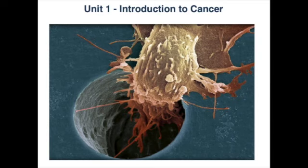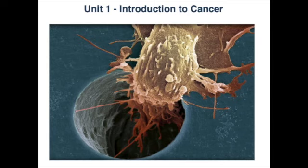Cancer can be defined as a disease in which a group of abnormal cells grow uncontrollably by disregarding the normal rules of cell division. Normal cells are constantly subject to signals that dictate whether the cell should divide, differentiate into another cell, or die. Cancer cells develop a degree of autonomy from these signals, resulting in uncontrolled growth and proliferation. If this proliferation is allowed to continue and spread, it can be fatal.